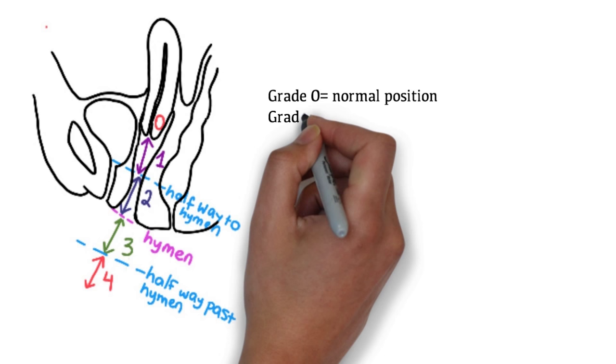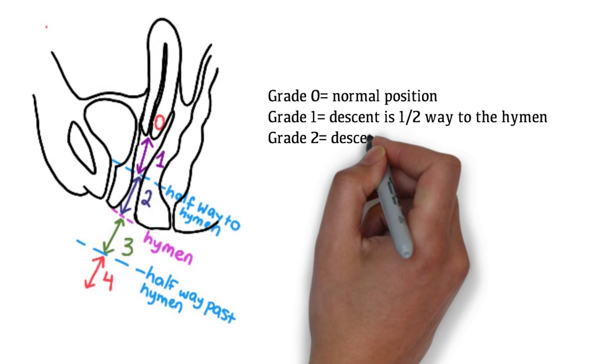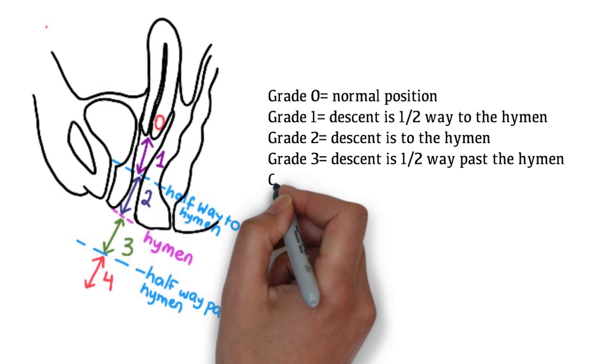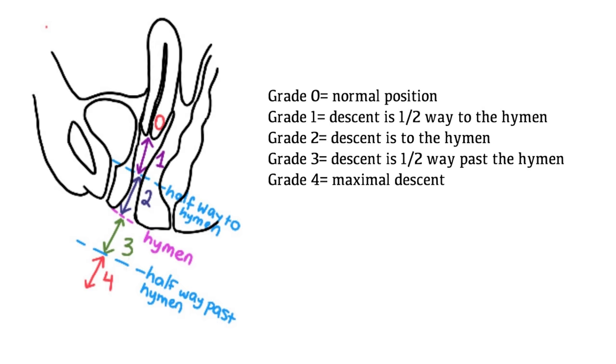Grade 0 is assigned when pelvic organs have a normal position. Grade 1 is when the descent is halfway to the hymen. Grade 2 is when the descent is to the hymen. Grade 3 is when the descent is halfway past the hymen. And grade 4 is the maximal possible descent.